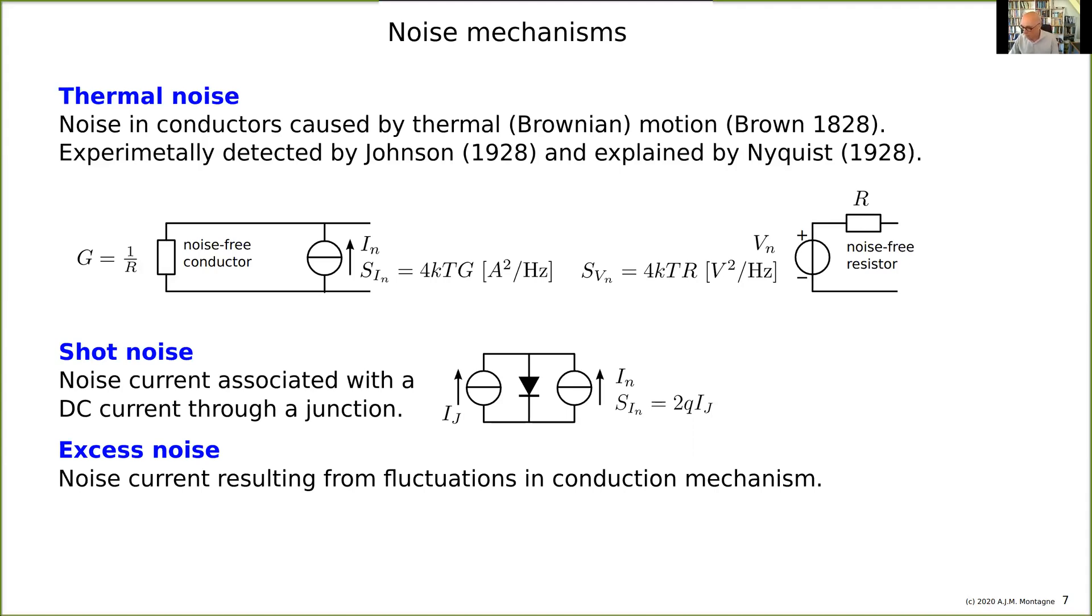There can only be a current if there is a non-zero voltage across the resistor, so it is clear that this noise is associated with current through a conductor or resistor or voltage across it. So in junctions we have it, and in resistors we have it, and usually it has a 1 over f spectral density character.